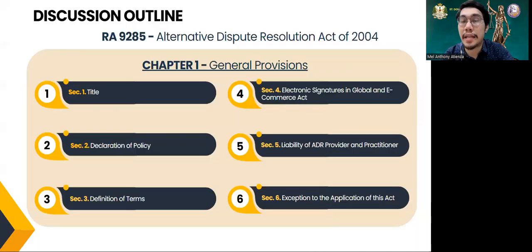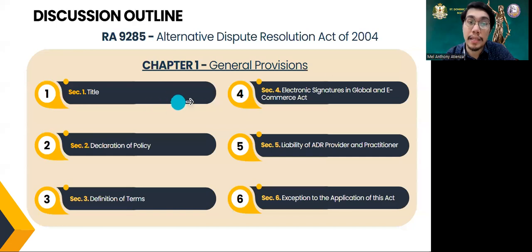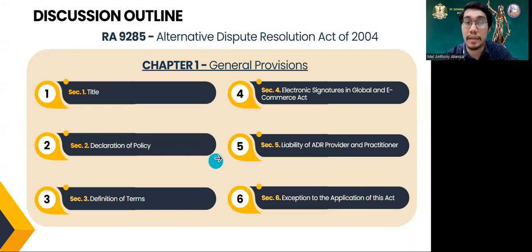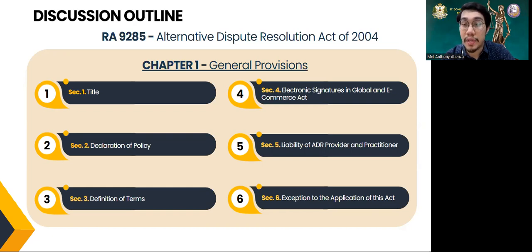Let's first take a look at the discussion outline. We have six provisions for Chapter 1: Section 1 (Title), Section 2 (Declaration of Policy), Section 3 (Definition of Terms — where we'll have a broadened discussion because there are a lot of terms), Section 4 (Electronic Signatures in Global and E-Commerce Act), Section 5 (Liability of ADR Provider and Practitioner), and Section 6 (Exception to the Application of This Act). The discussion will be supported by some Philippine jurisprudences, just very encompassing in the interest of time.